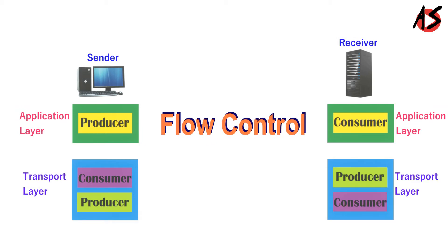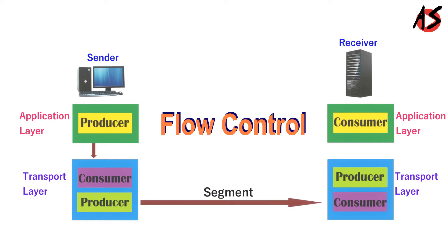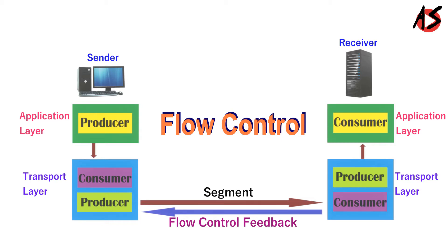Flow control is managed by TCP using flow control feedback. When data is transferred from sender to receiver, it travels from the sending process down to the sending TCP, then to the receiving TCP, and up to the receiving process. Flow control feedback, however, travels in the reverse direction — from the receiving TCP to the sending TCP, and from the sending TCP up to the sending process. In other words, the receiving TCP controls the sending TCP.